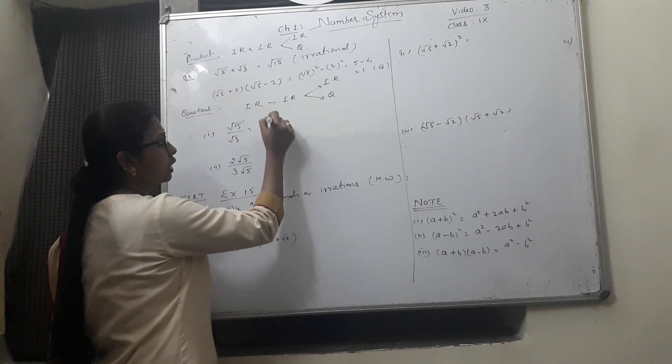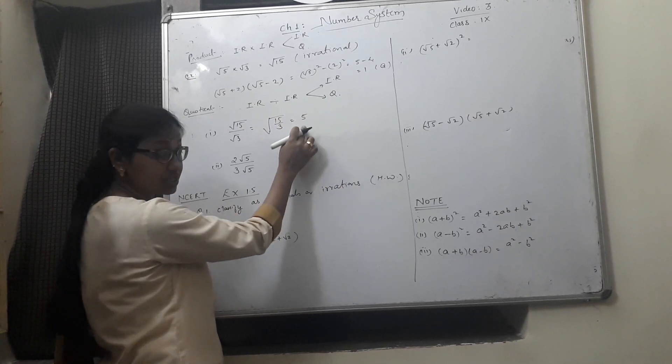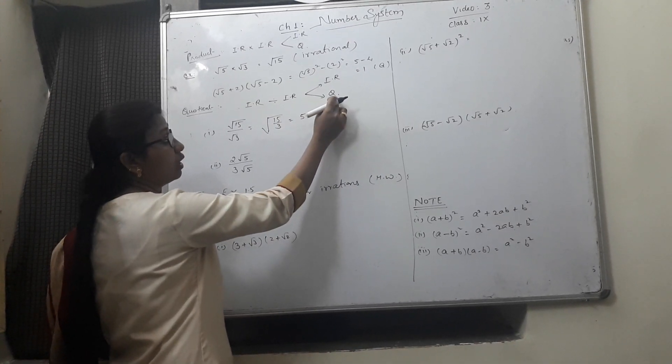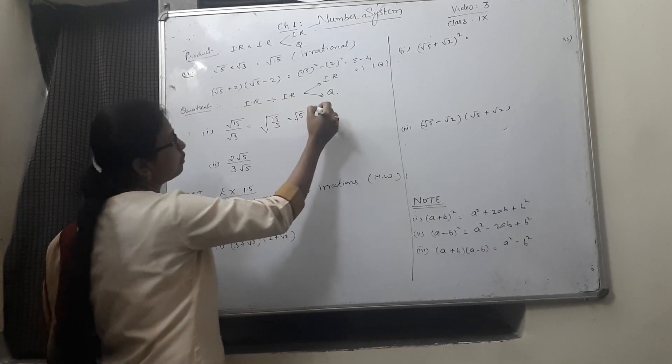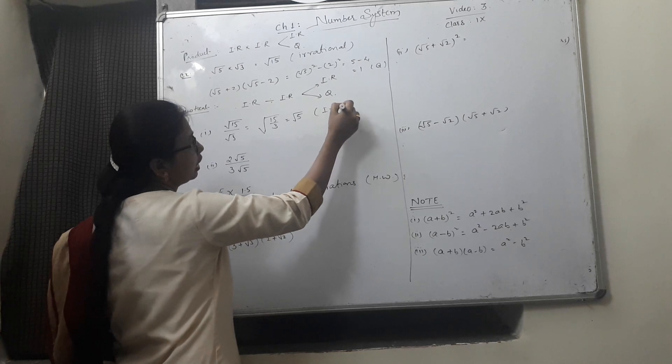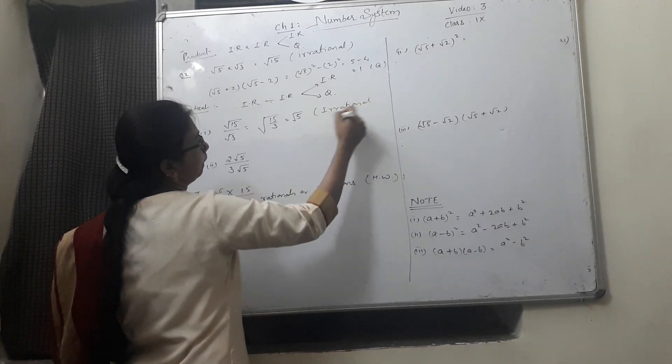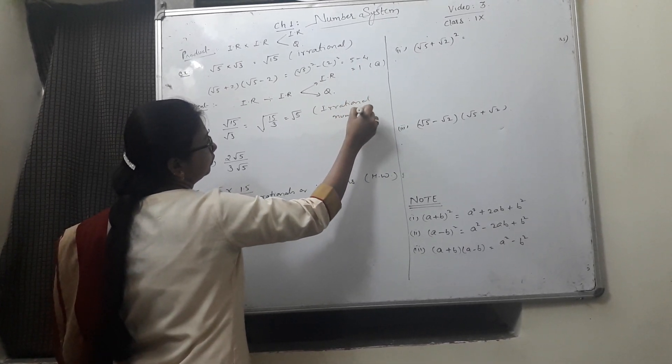15 by 3 is 5. Root 15 by root 3 gives you root 5 which is clearly an irrational number.